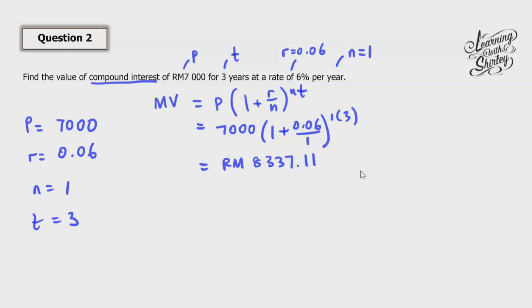In order to find the compound interest, which is the I, we're going to use MV minus P, minus the principal. So equals to. So 8337.11 minus the principal is 7,000. So minus 7,000.